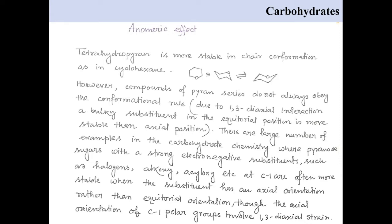Now, we all know that tetrahydropyran is more stable in chair conformation as in cyclohexane. However, compounds of pyran series do not always obey the conformational rule. The conformational rule, due to 1,3-diaxial interaction, states that a bulky substituent in the equatorial position is more stable than axial position.